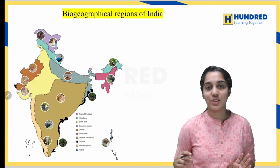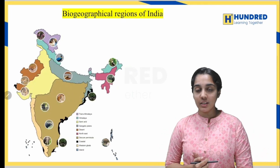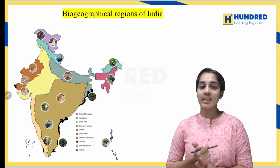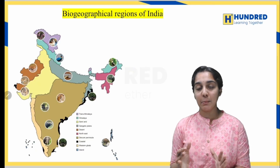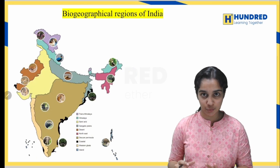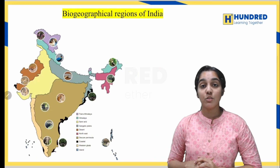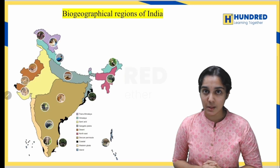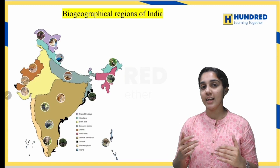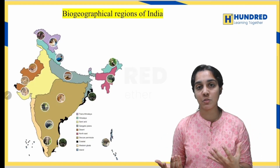Hello students, today I am here with Zoology Chapter 11: Biodiversity and its Conservation. In this chapter there are two interesting topics. Take note from today's video — the two topics are biogeographical regions of India and Red Data Book.